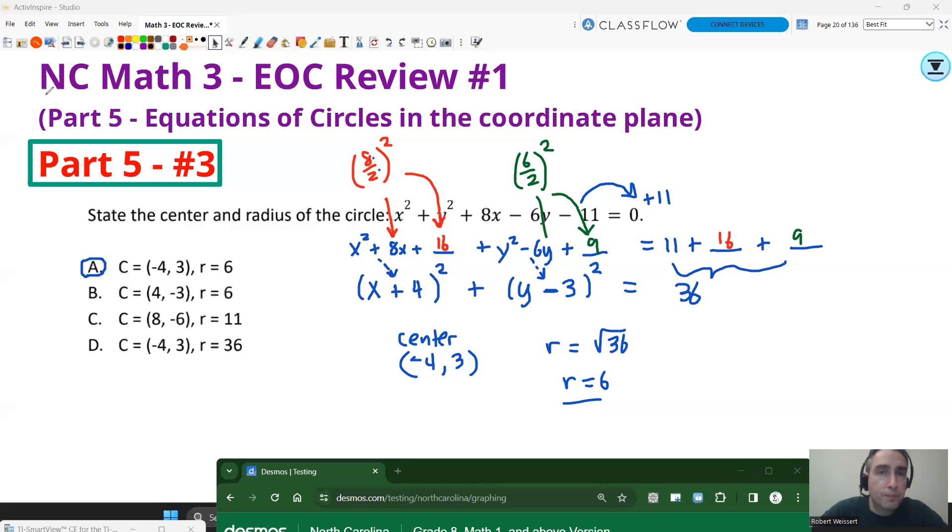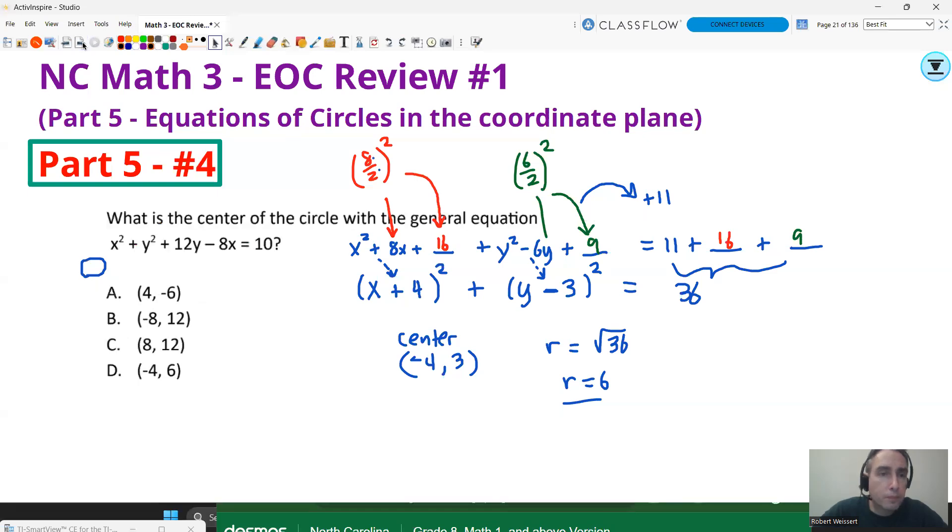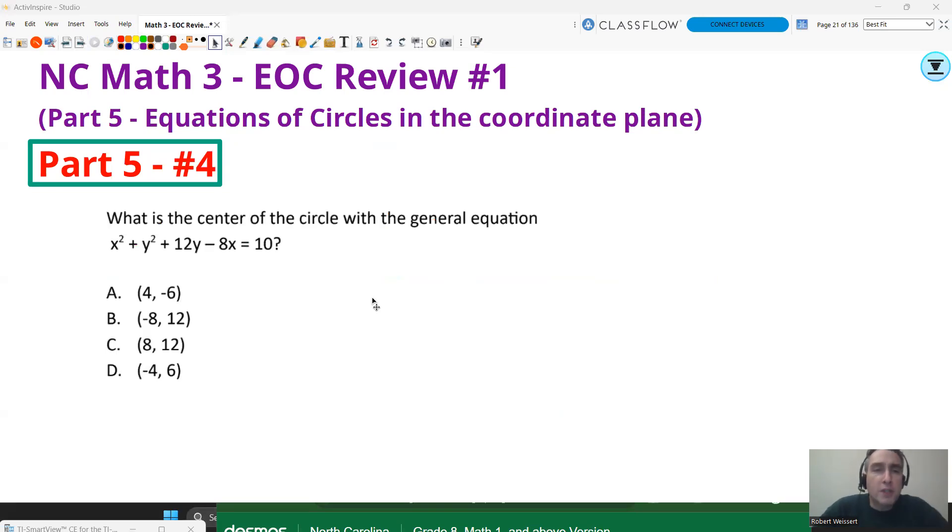All right. Go to question 4. Question 4 says, What is the center of the circle with a general equation: x² + y² + 12y - 8x = 10. We just want to know the center. So you can do what I did on the last question. You can also graph it. Find a way to do it that makes sense to you. Pause the video. And then we can check the answer.